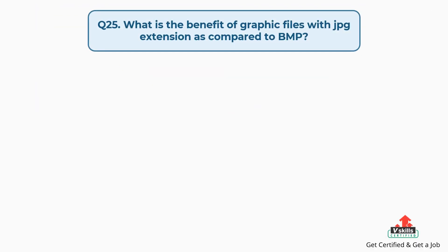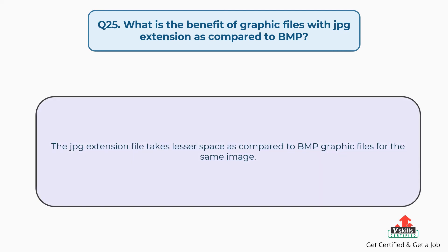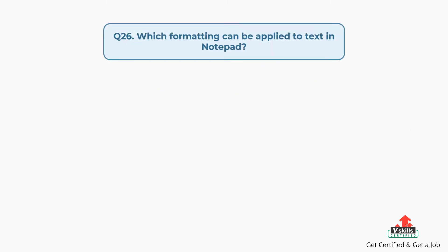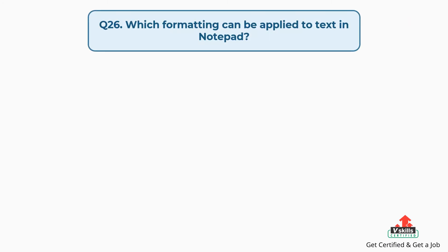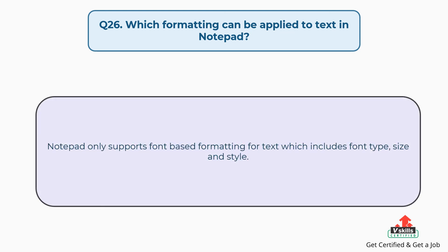Question number twenty-five: what is the benefit of graphic files with JPG extension compared to BMP? The answer is, a JPG extension file takes lesser space compared to BMP graphic files for the same image. Question number twenty-six: which formatting can be applied to text in Notepad? The answer is, Notepad only supports font-based formatting, which includes font type, size and style.